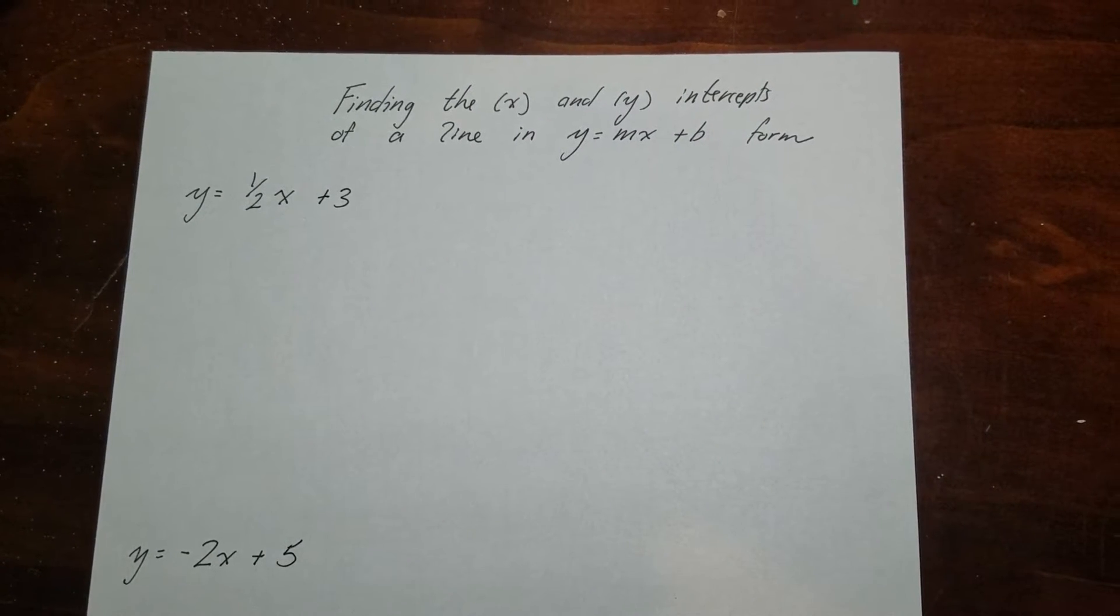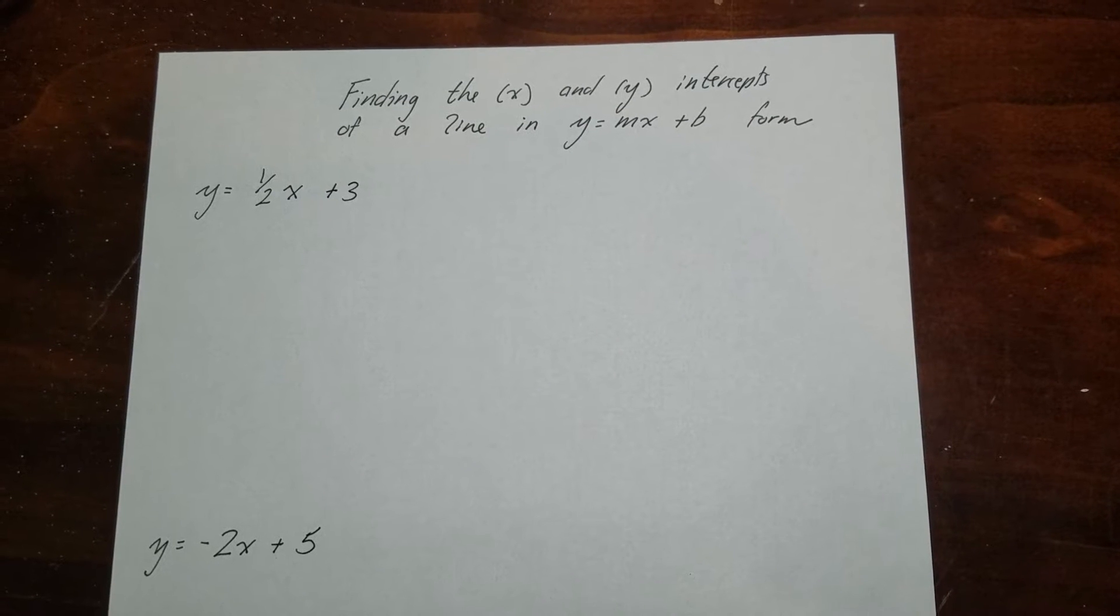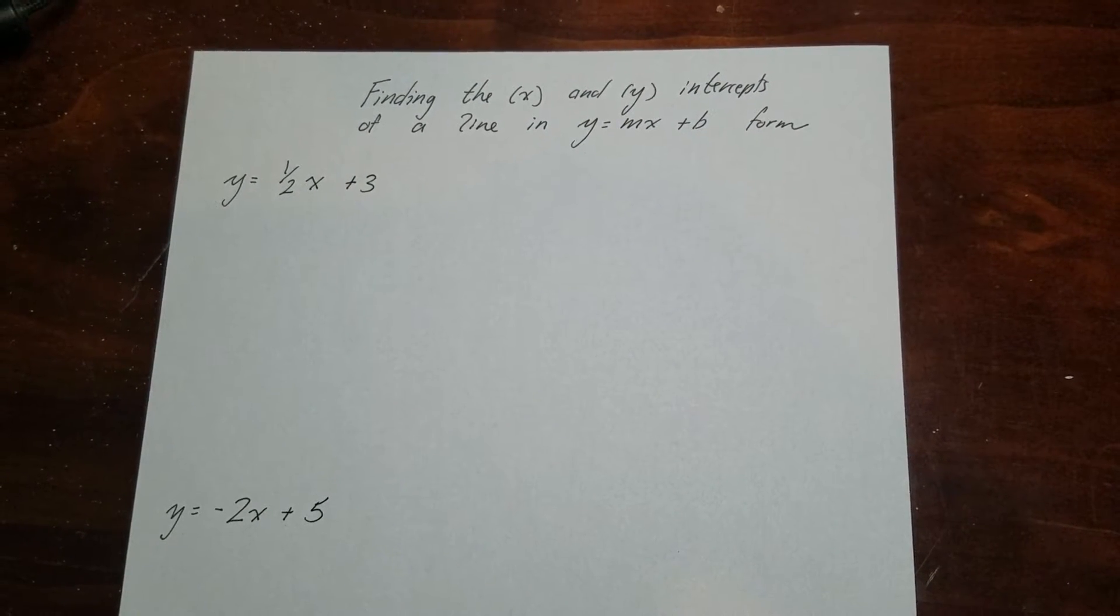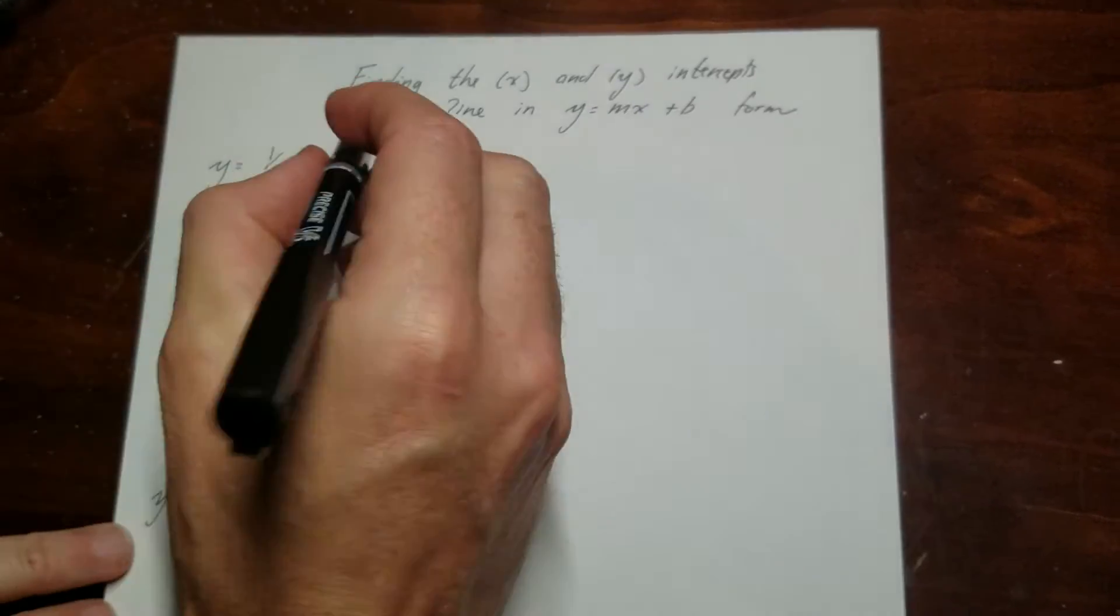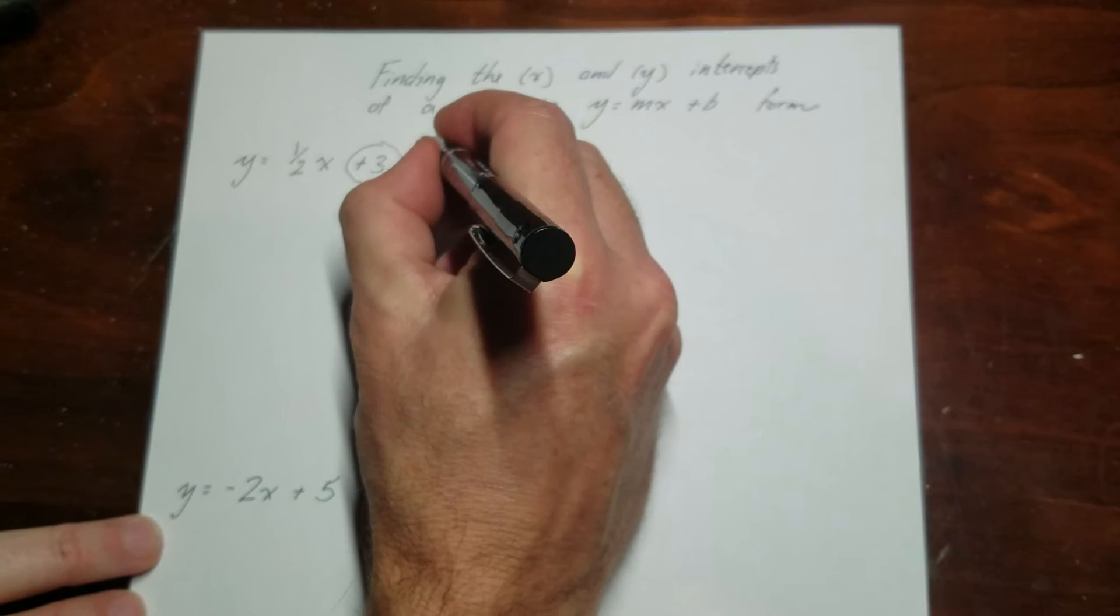We're going to be finding the x and y intercepts of a slope-intercept line. The benefit of a slope-intercept line is it's called slope-intercept because it actually tells you one of the intercepts. So this number right here would be our y-intercept.